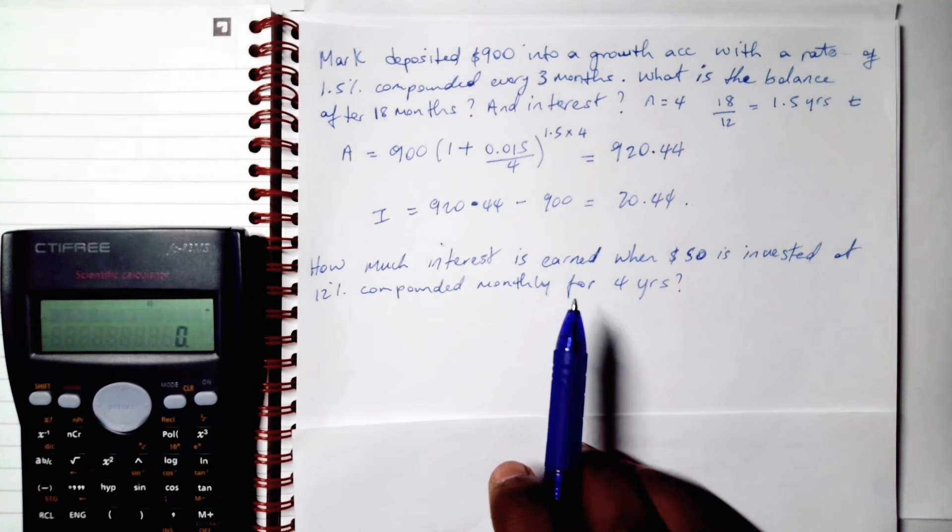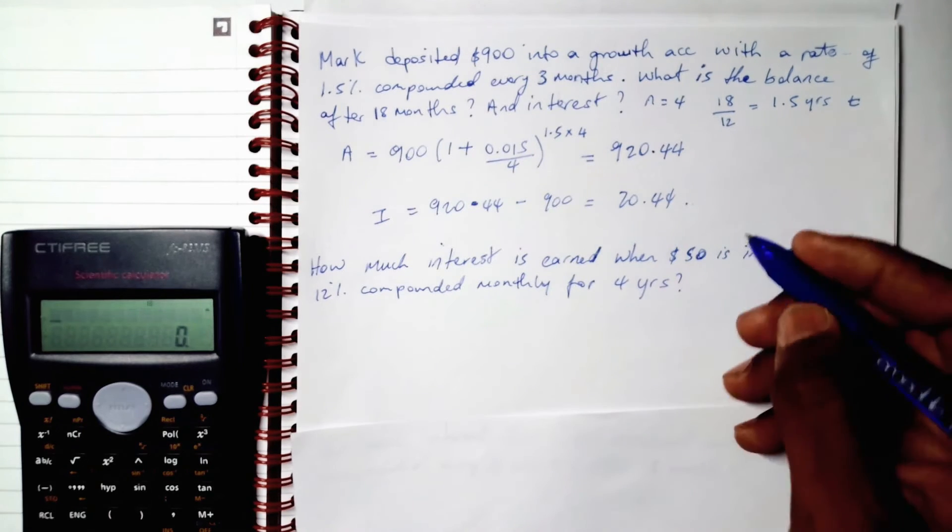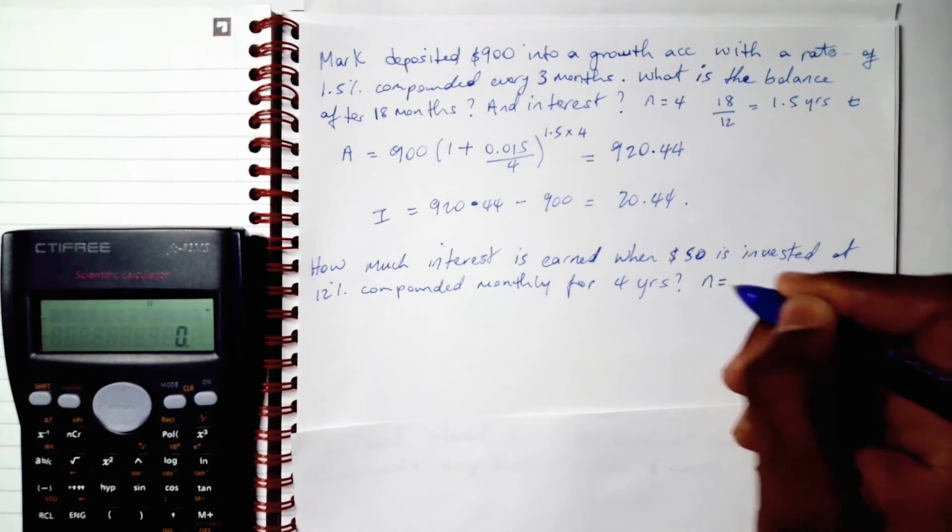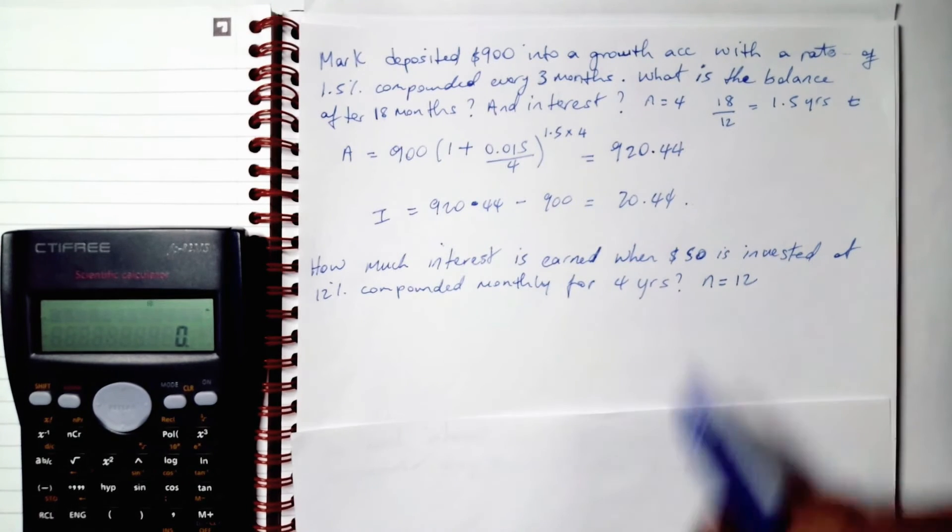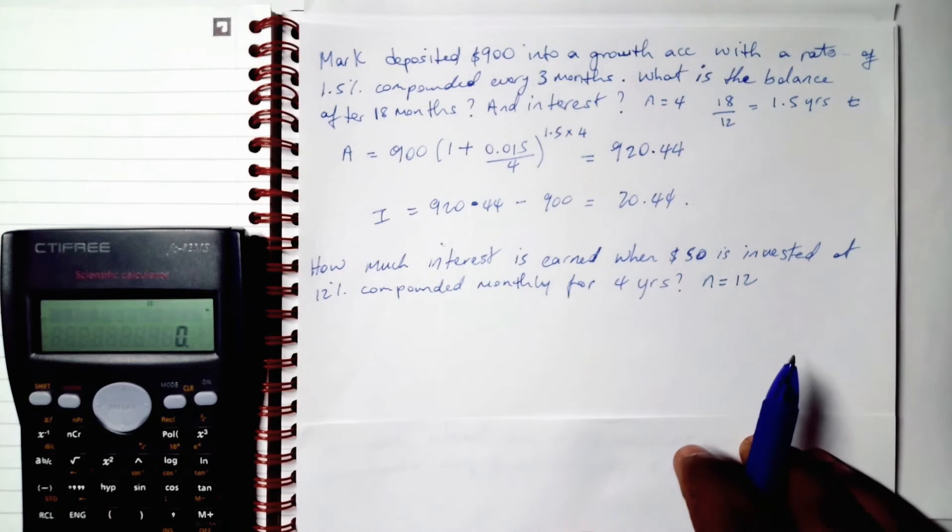So every month the interest rate compounds. How many times is that for the year? If it compounds monthly, therefore it compounds 12 times for the year. Hence, N is equal to 12. And they already gave us our years in years. So we're good.